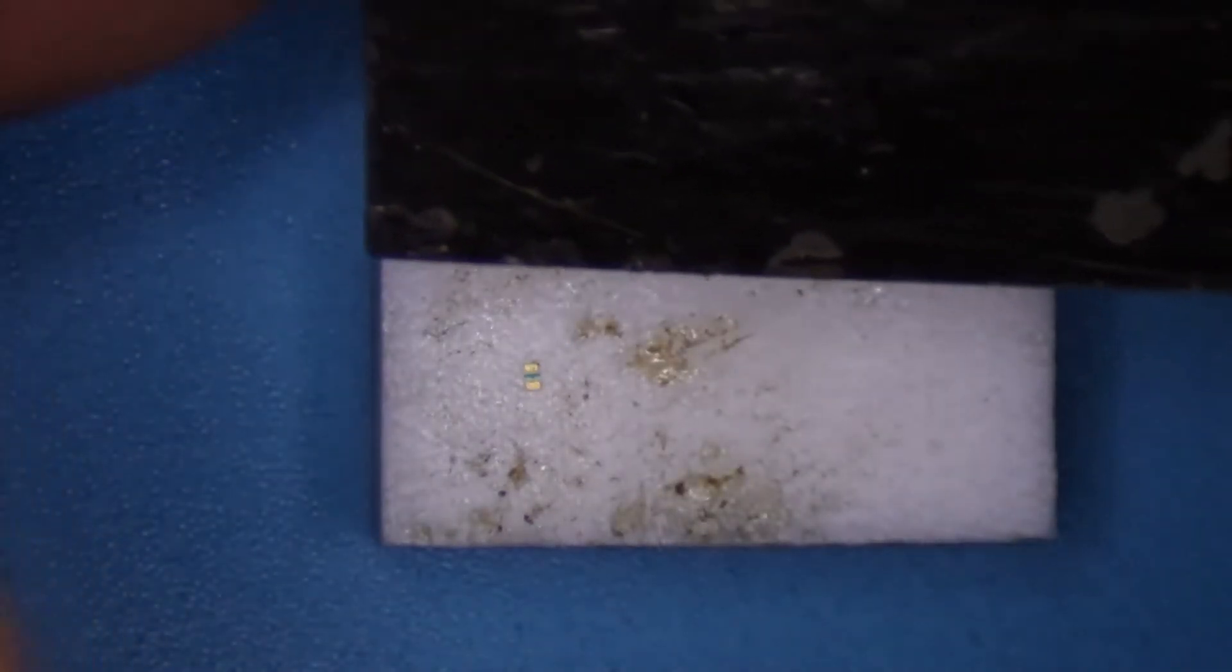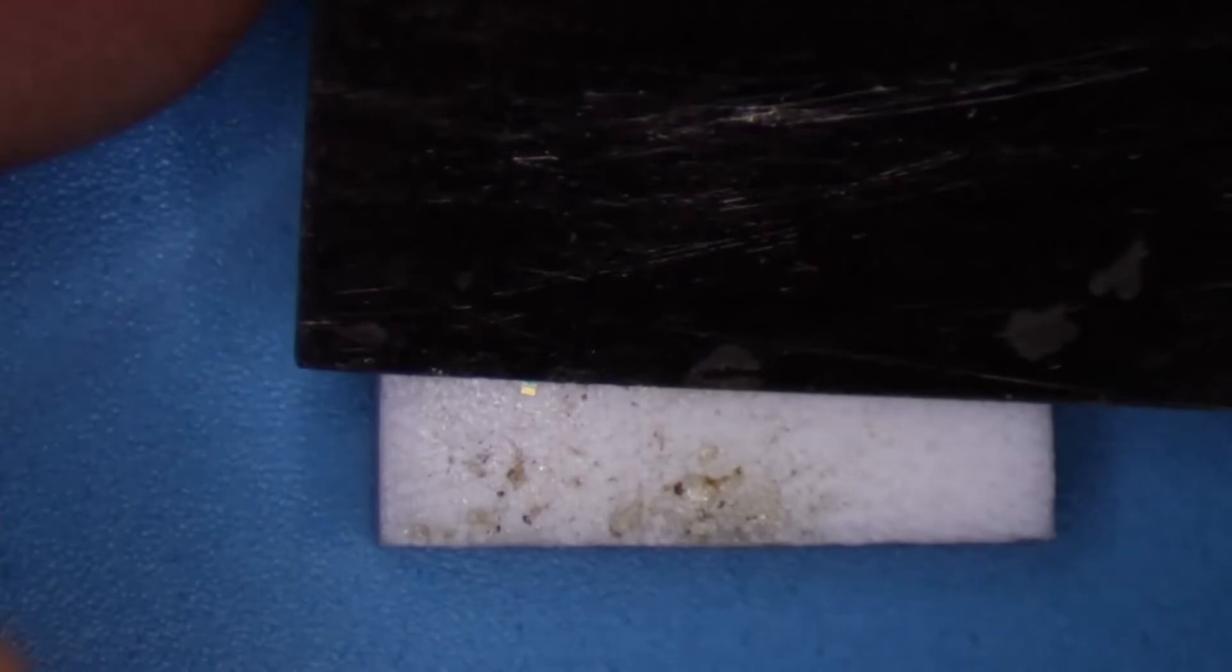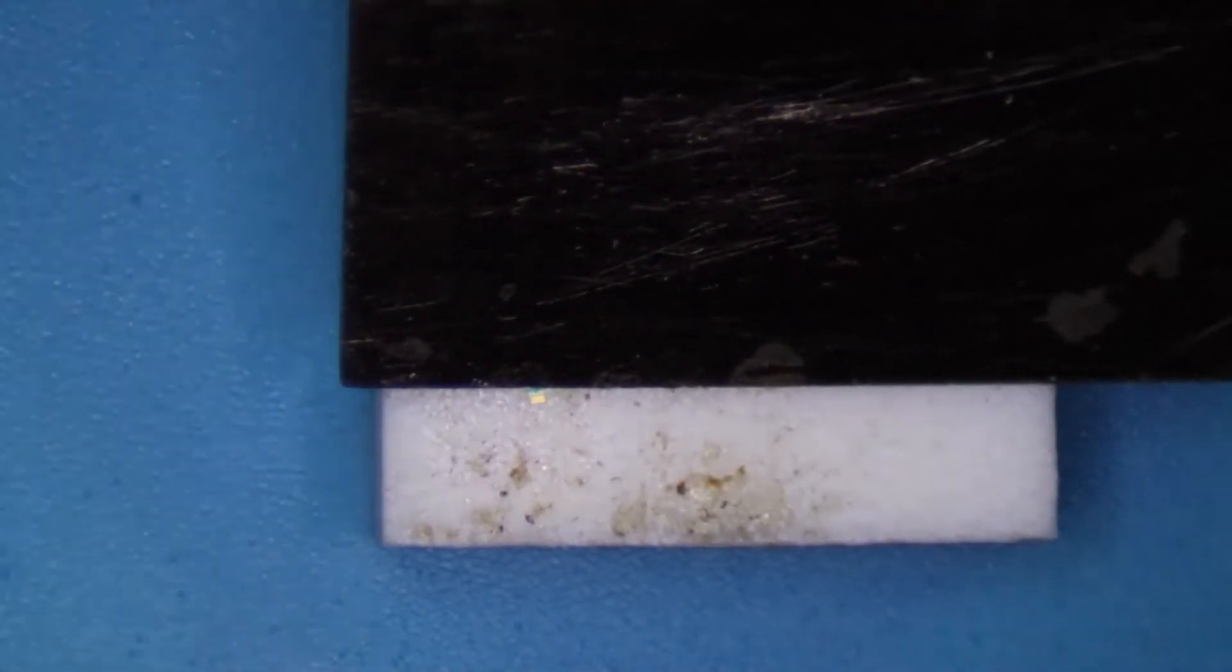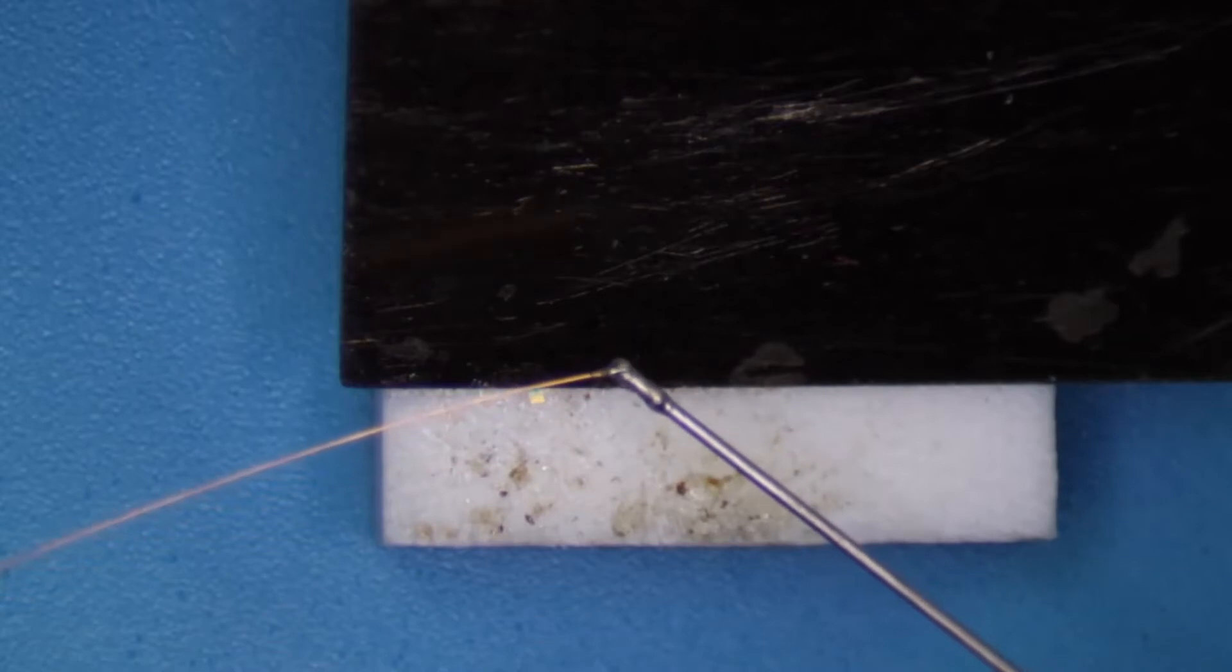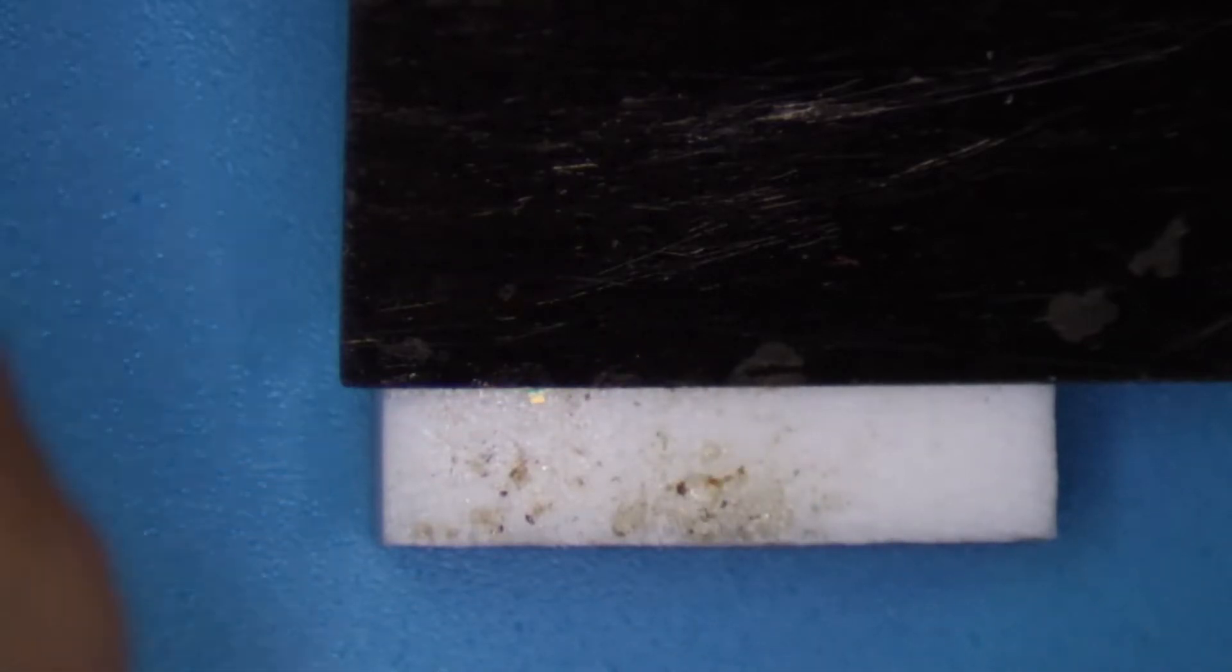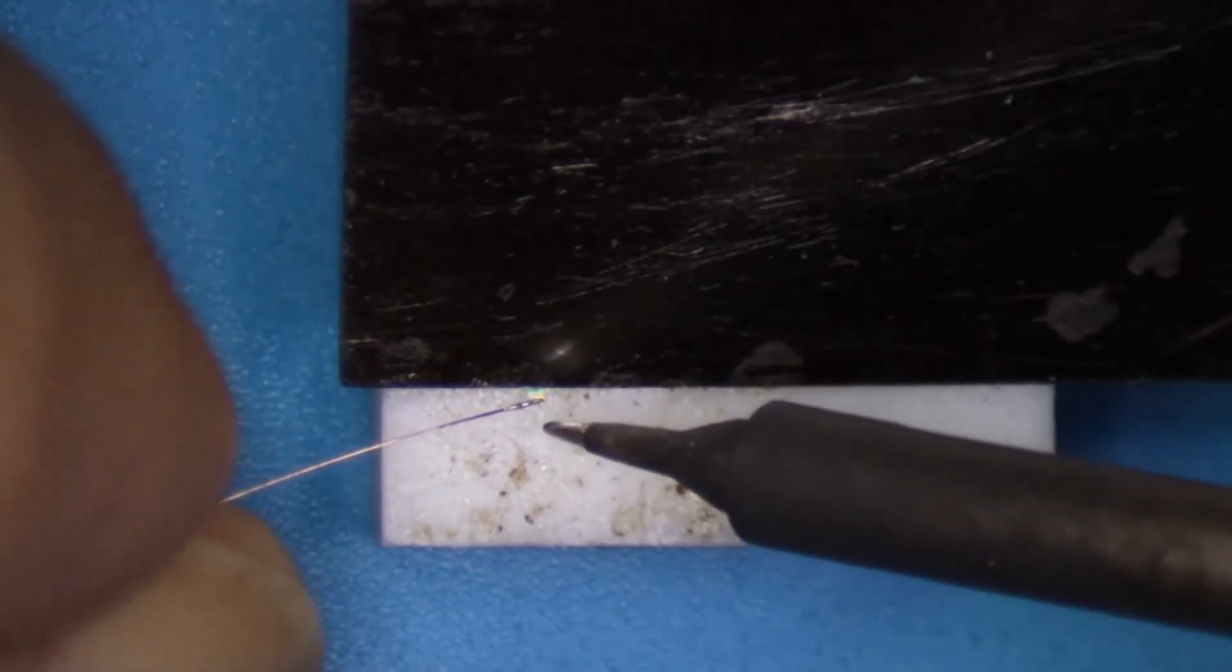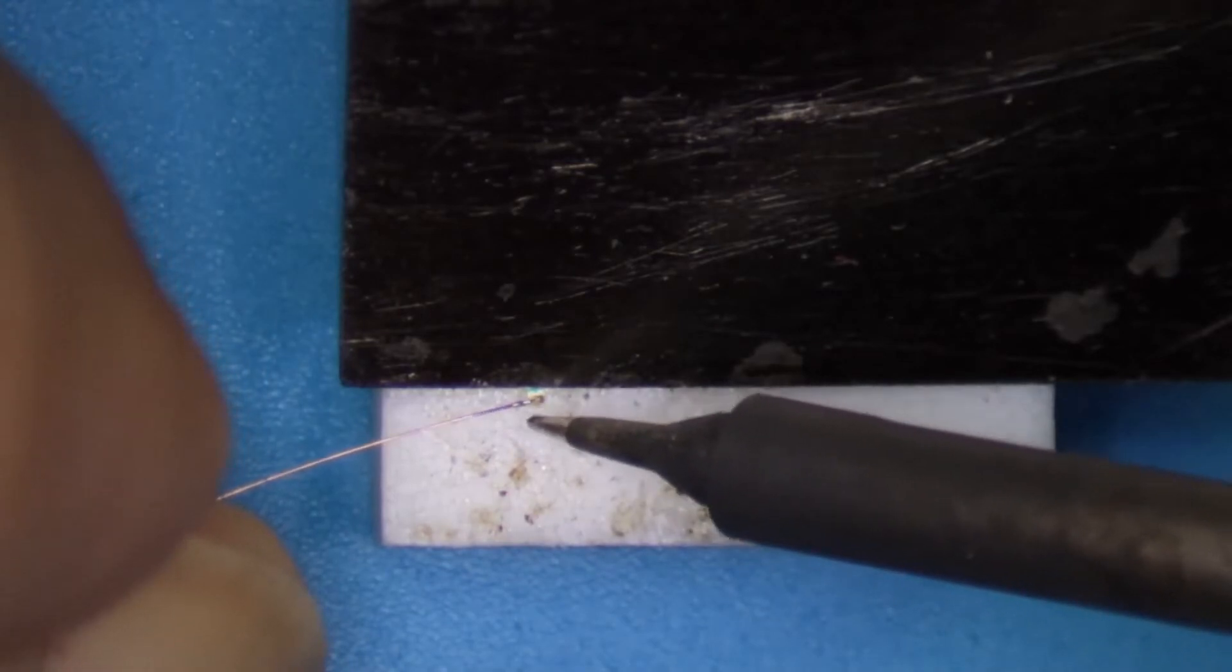I'm going to hold it down. Stability at that size is important. There's the flux again. A little bit of flux on the end of that wire and then I'll rub it on the SMD LED. I've got a little bit of solder on the soldering iron.